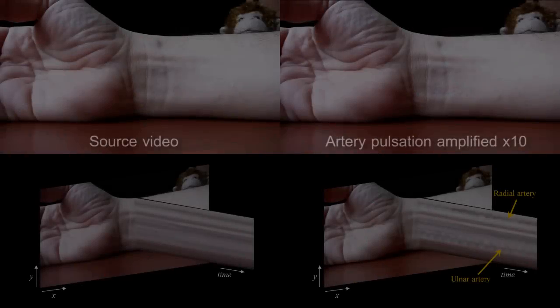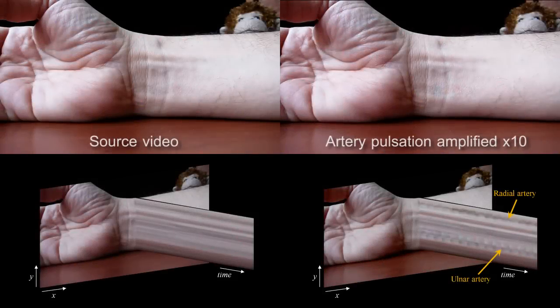The same algorithm can also reveal imperceptible motions, like the pulsing motions of arteries in the wrist.